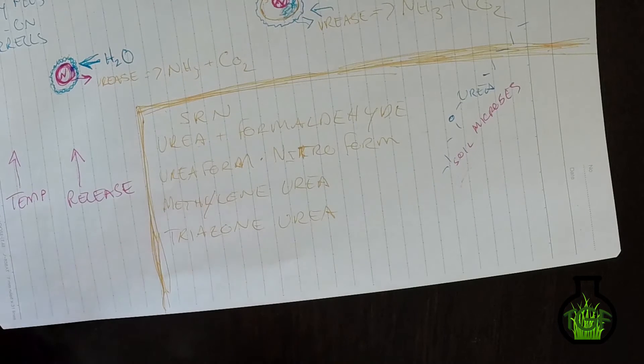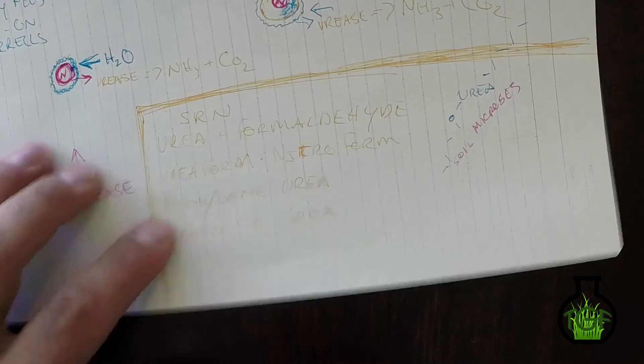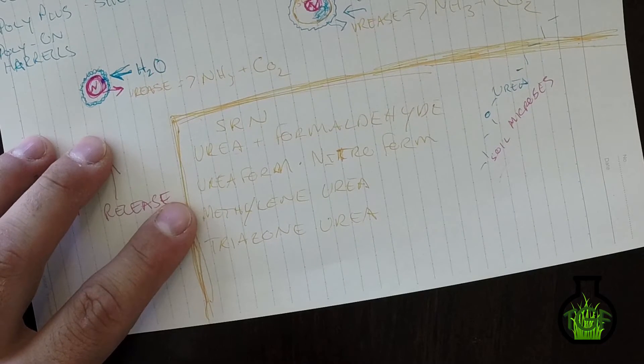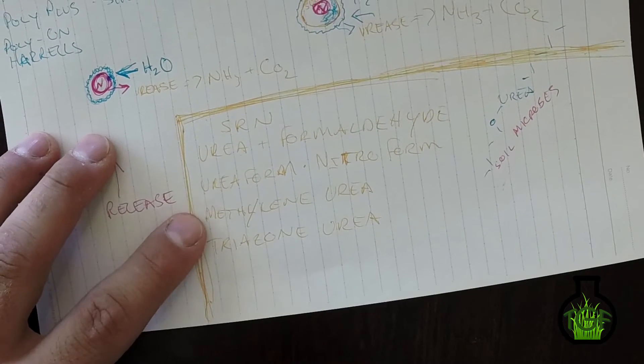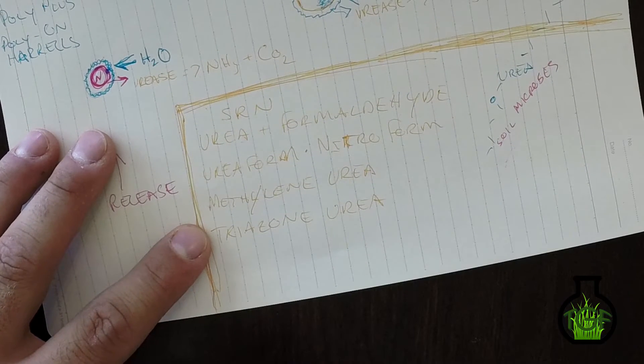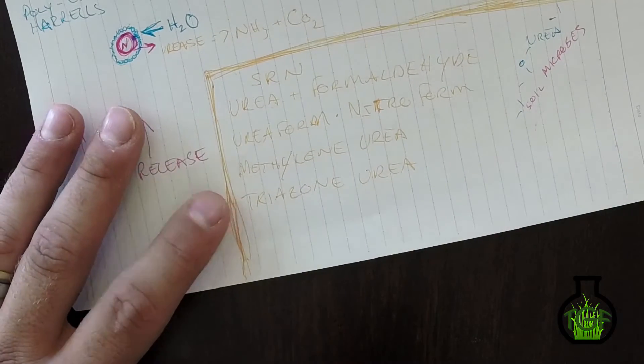So with urea form, you end up getting like 85% slow release. So if it comes out to a 30-0-0, it's going to be about 85% slow release. Whereas methylene urea is not going to be that high—I think you come in at about 60% slow release. And with the triazone, I think you're at like 70% slow release.